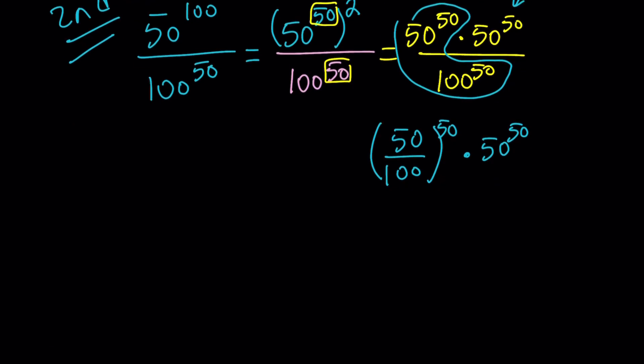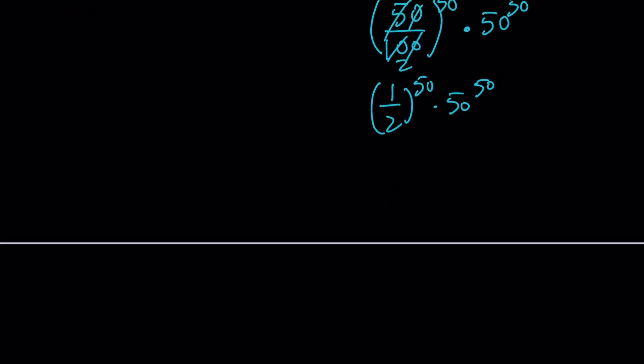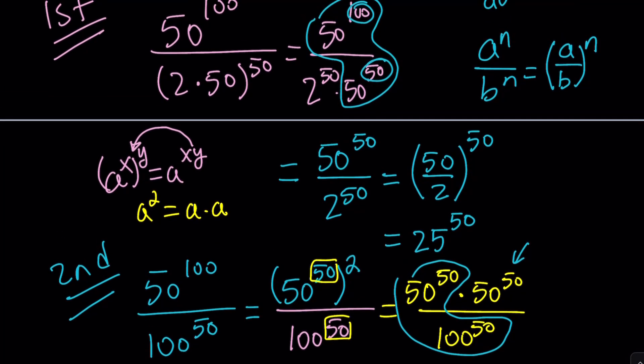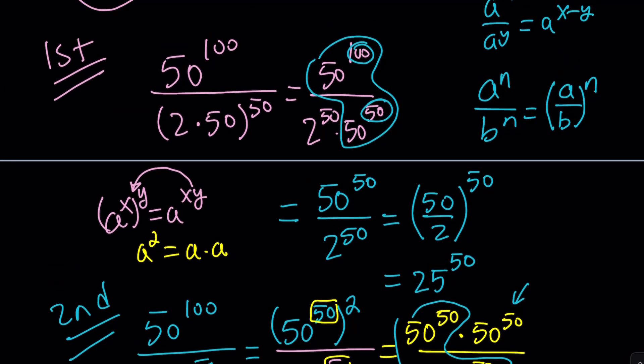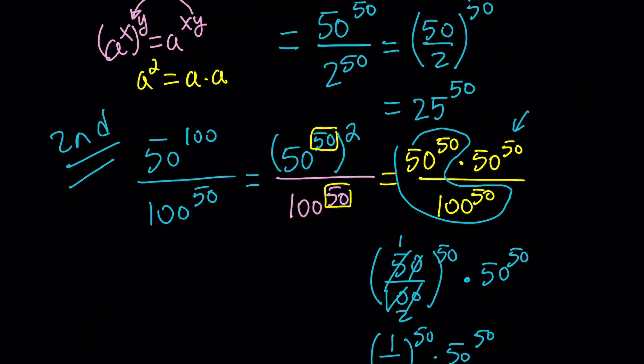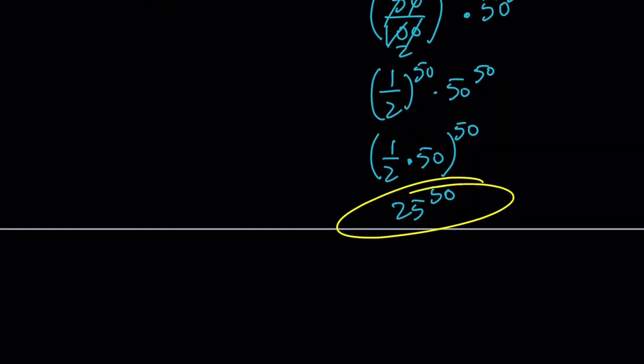And then everything will simplify. 50 divided by 100 is 1 half. This is going to be 1 half to the power 50 times 50 to the power 50. Again, we have the same exponent. So we can multiply the bases. 1 half times 50 and then raise the product to the 50th power. And that's going to give us 25 to the 50th power, which is what we found before. We got the same answer with the first method. Of course, our answers should always agree.